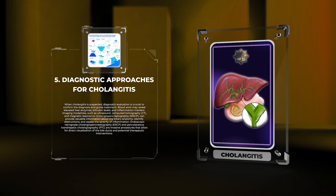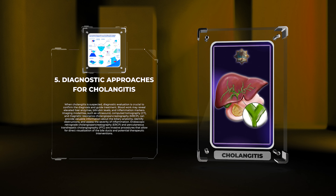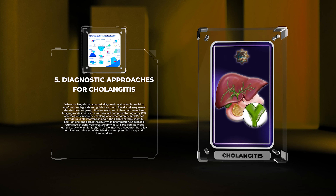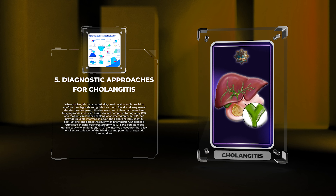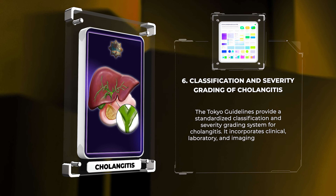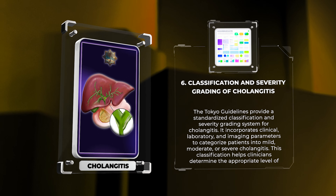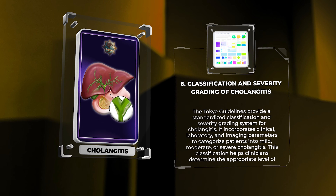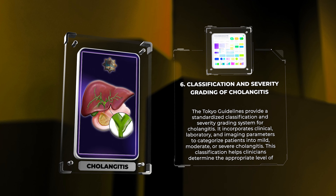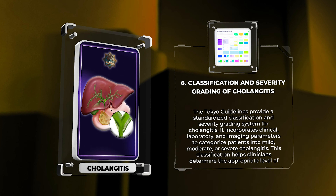Endoscopic retrograde cholangiopancreatography (ERCP) and percutaneous transhepatic cholangiography (PTC) are invasive procedures that allow for direct visualization of the bile ducts and potential therapeutic interventions. The Tokyo Guidelines provide a standardized classification and severity grading system for cholangitis, incorporating clinical, laboratory, and imaging parameters to categorize patients into mild, moderate, or severe cholangitis. This classification helps clinicians determine the appropriate level of intervention and guide antibiotic therapy.